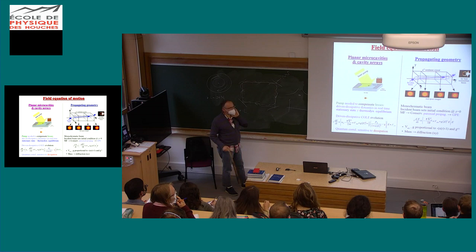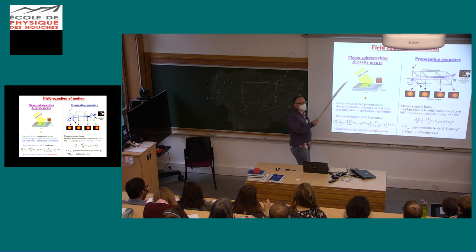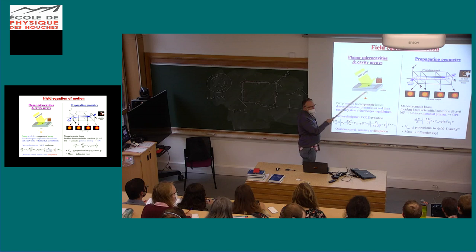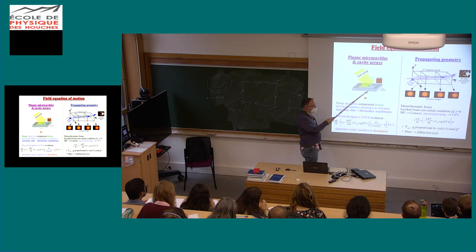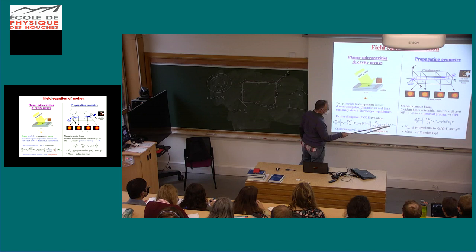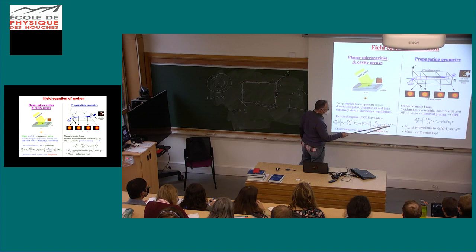This slide basically summarizes all the concepts we are going to discuss today in comparison to what we saw yesterday. Yesterday we had a planar cavity which had to be driven by some external pump, decaying by radiative emission, and the fluid of light was living in the cavity plane. It was injected from outside, had dynamics along the cavity plane, and was observed outside from the radiative emission. The equation of motion at mean field had GPE plus pumping, dissipation, and possibly coherent pumping. In that setup, the pump was crucial to compensate losses.